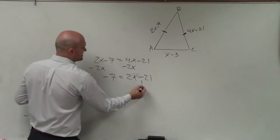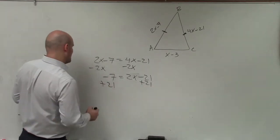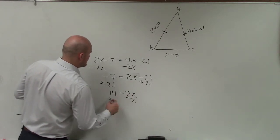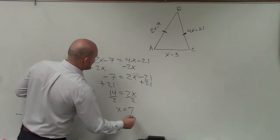Now, to solve for x, I'll add 21, add 21, and I get positive 14 equals 2x, divide by 2, divide by 2, x equals 7.